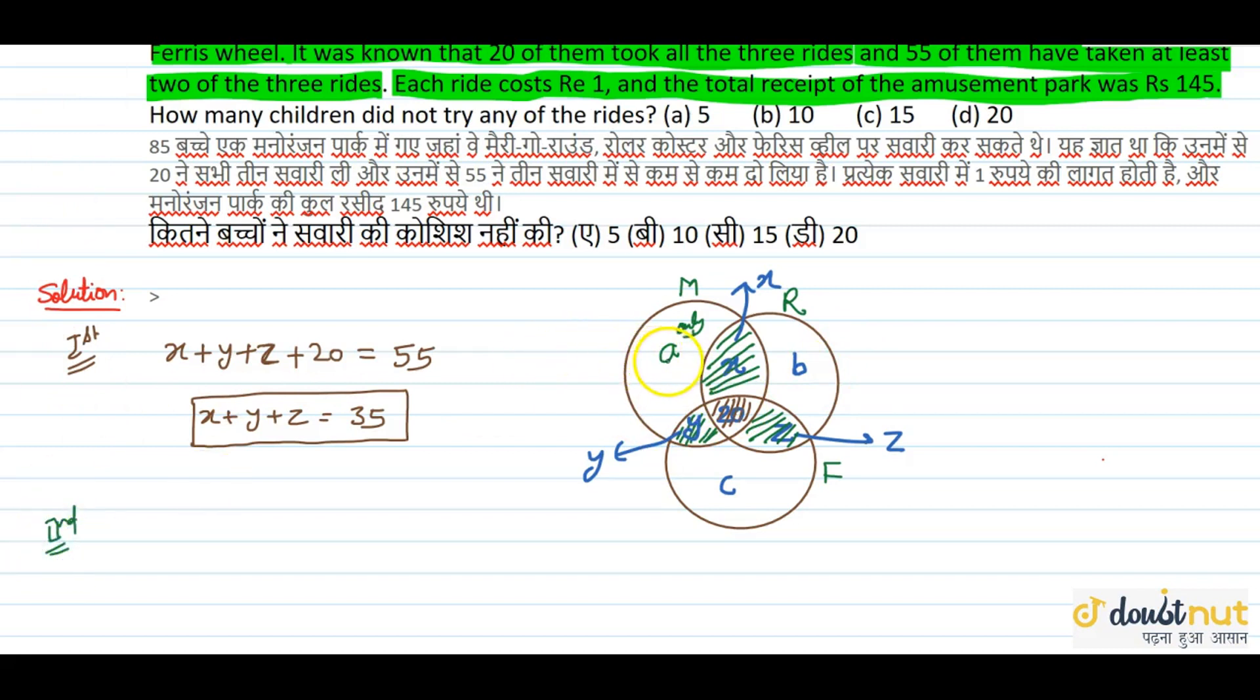So our children who have only a single ride, this is a plus b plus c. They only have 1 ride each. Now, the x, y, z, they have 2 rides each. So this will have double charge. So this will be 2 times (x plus y plus z). Because they have 2 rides.